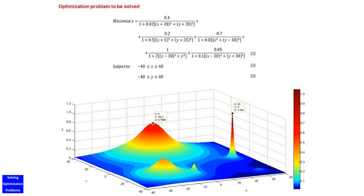We will show you the GA code in MATLAB, and then we test its performance using this difficult optimization problem. As you can see, this optimization problem is very hard, especially for search algorithms. Nevertheless, this GA can consistently find the global optimal solution — 100% success rate.